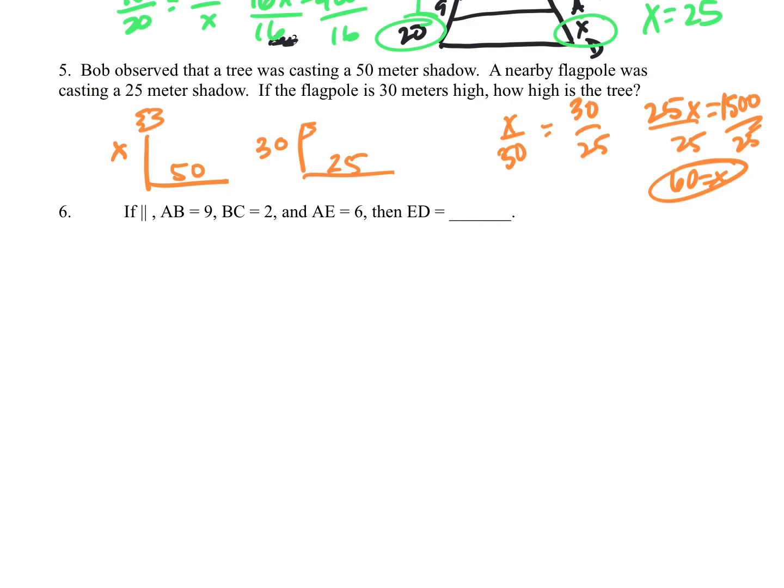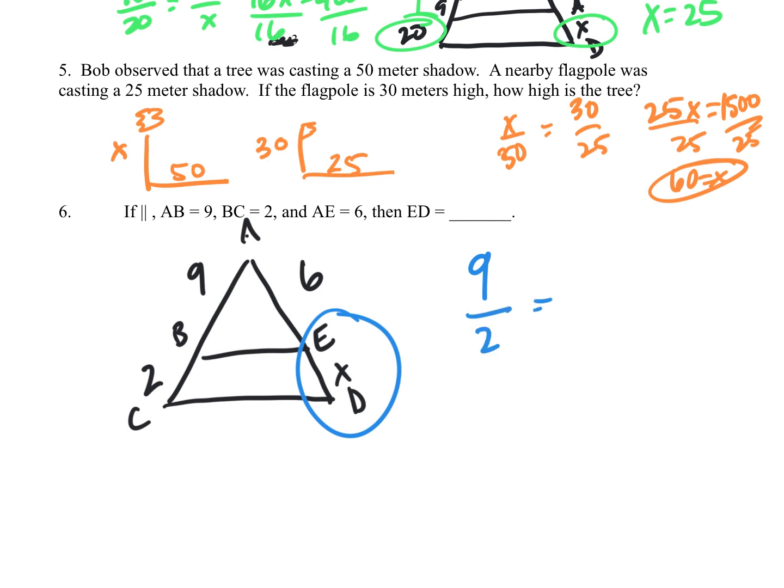Okay, the next one has a picture like this, and we're trying to figure out how long ED is. So I'm going to say 9 over 2 equals 6 over X. So 9X equals 12. So X is equal to 12 over 9. Divide top and bottom by 3, which equals 4 thirds.